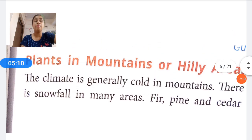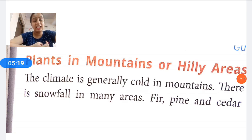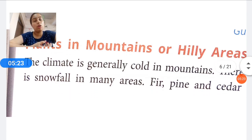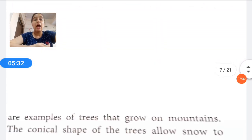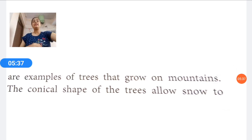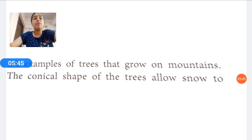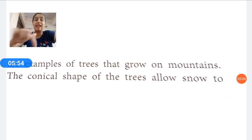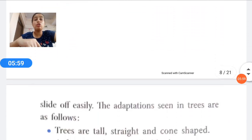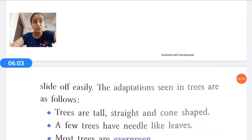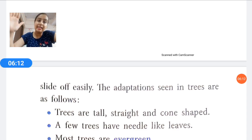Now we move to plants in mountains or hilly areas. Mountains generally have a cold climate with snowfall in many areas. Fir, pine, and siddhar are examples of trees that grow on mountains. These trees have a conical shape — like an ice cream cone. The conical shape allows snow to slide off easily, since they grow in regions that receive snowfall. The snow cannot remain on the tree and slides off easily.